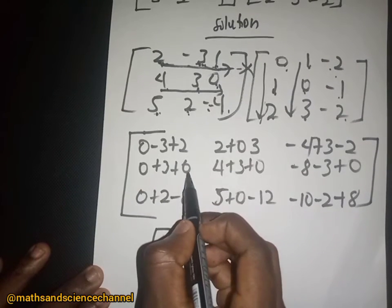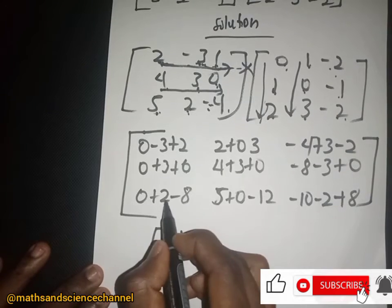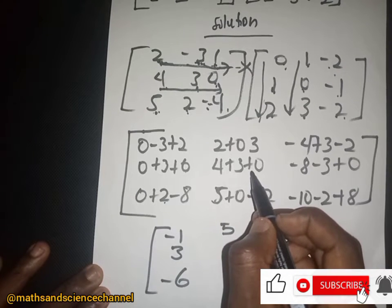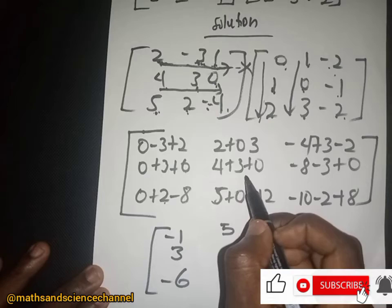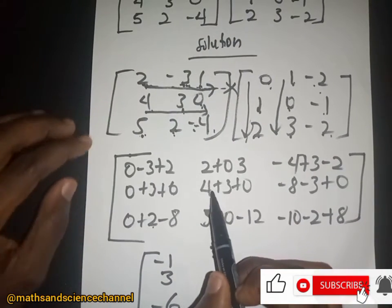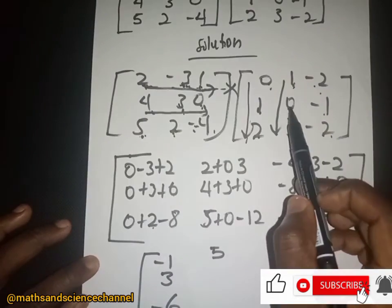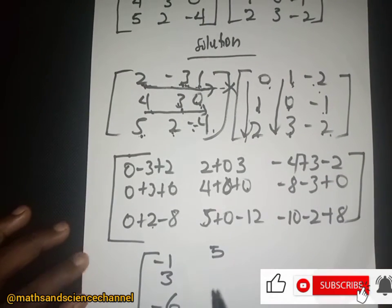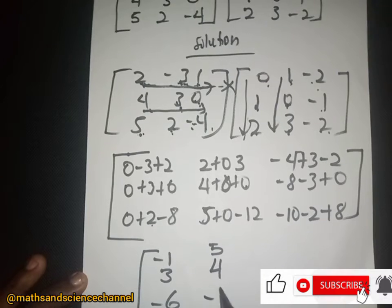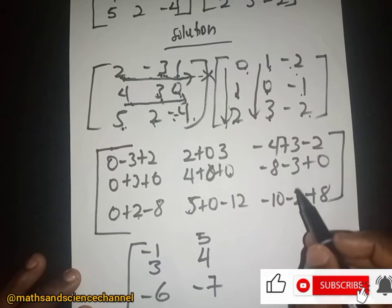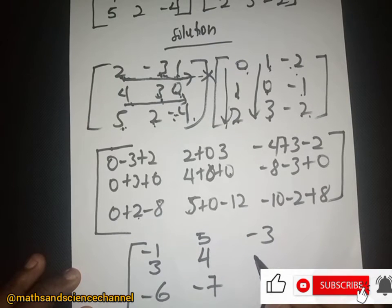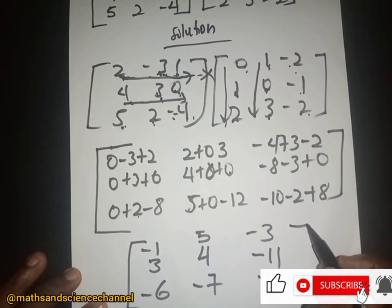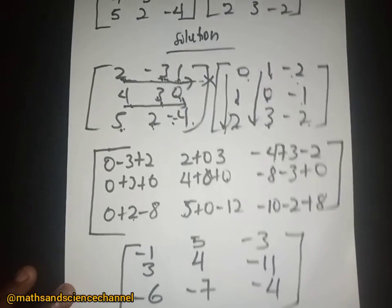When we solve this, the result matrix entries are: negative 1, 3, and negative 6 in the first row; 5, 4, and negative 7 in the second row; and negative 3, negative 11, and negative 4 in the third row. That would be the final answer for the multiplication of these matrices.